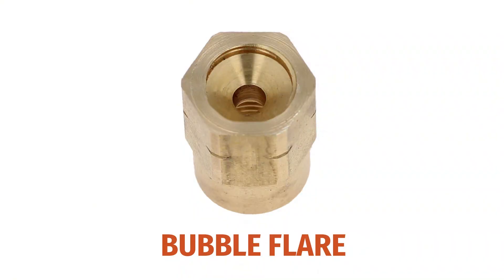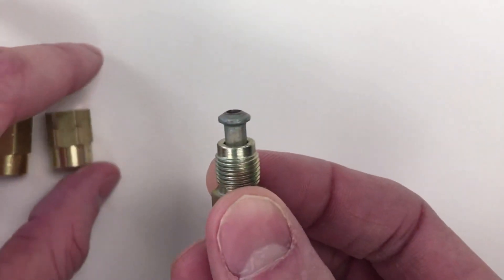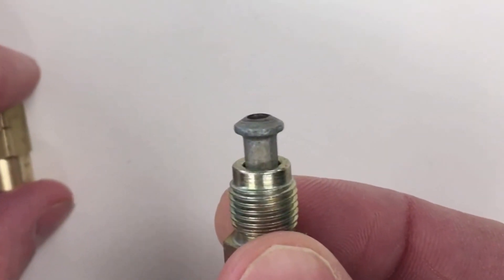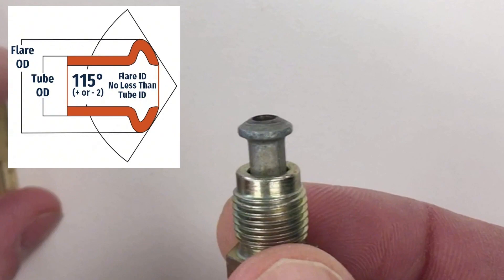We will begin with the bubble flare. A bubble flare is created by crimping the end of the brake line into an outward bulging shape, similar to a bubble or a mushroom.